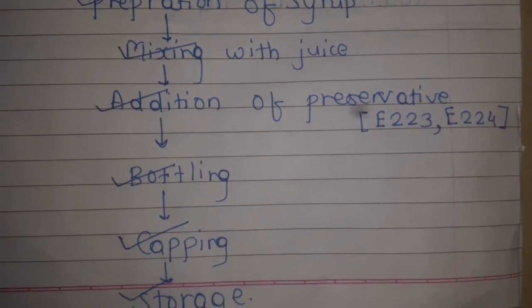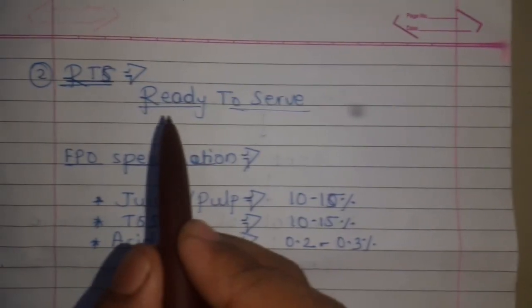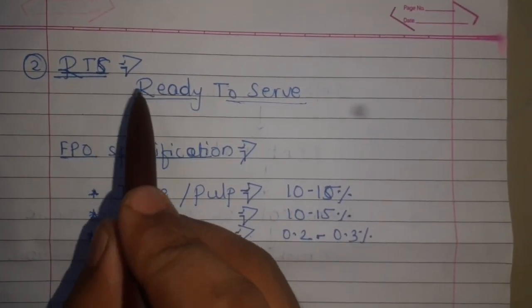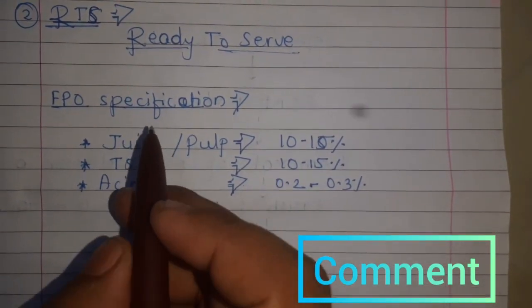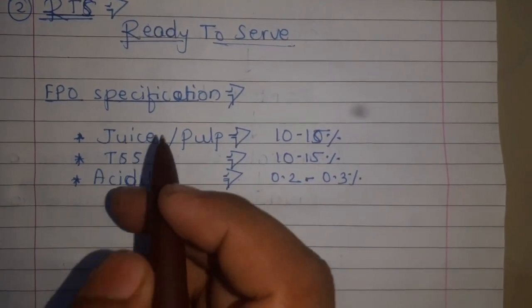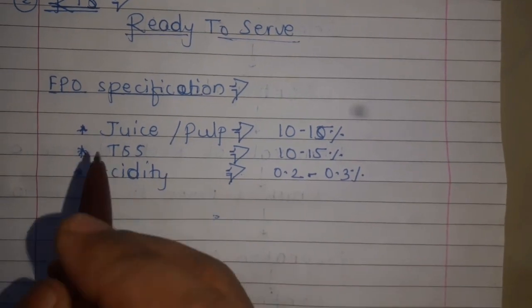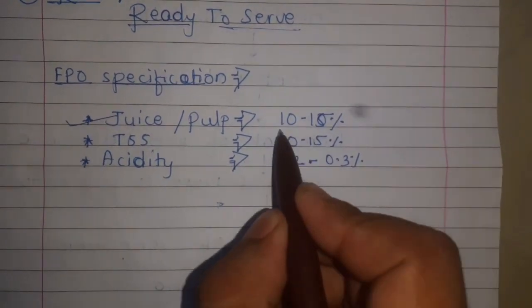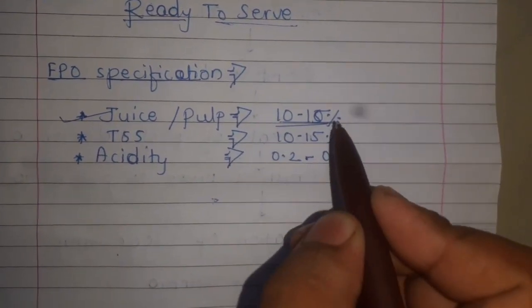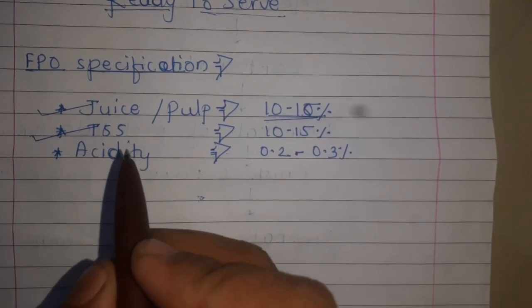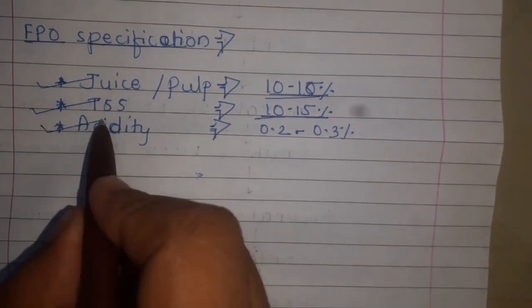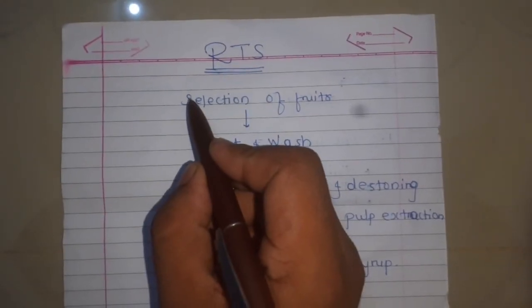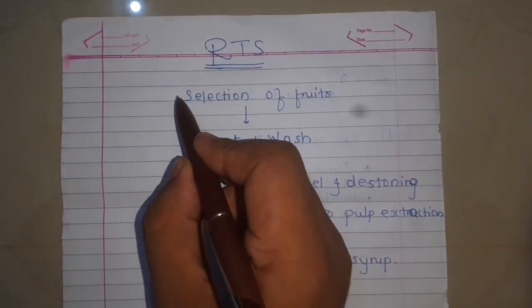Allow them to cool, label and store in cool and dry places. Our second point is RTS, which means Ready To Serve. The specifications of RTS as per the food product organization are: juice pulp 10–15%, TSS (total soluble solids) 10–15%, and acidity 0.2–0.3%.